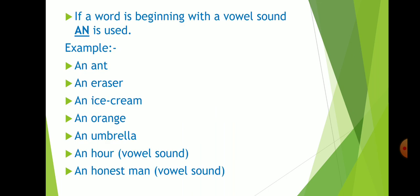Next, if a word is beginning with a vowel sound, an is used. For example, an ant, an eraser, an ice cream, an orange, an umbrella.